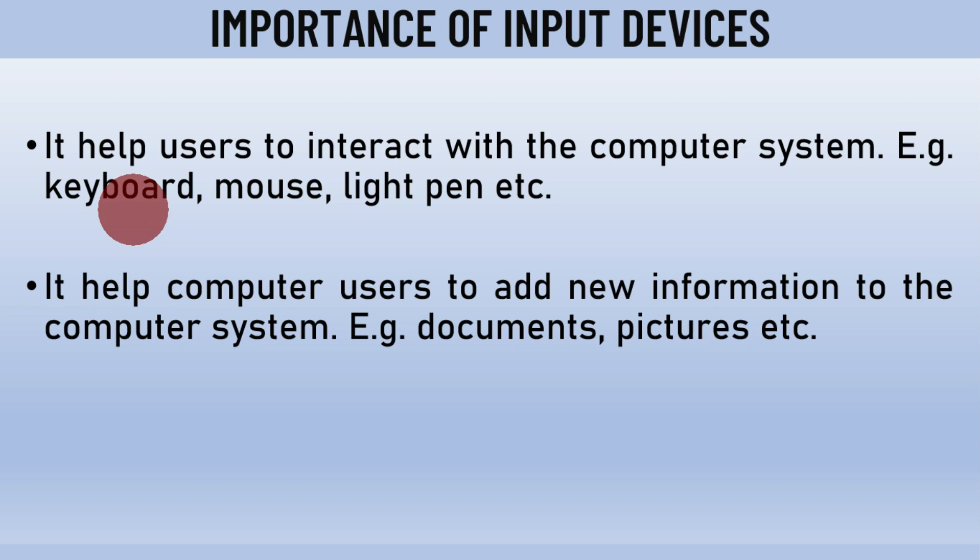The second importance of input devices is that they help computer users to add new information to the computer system, such as documents, pictures, videos, and audios. For example, if you have a flash drive containing video files, you can transfer that data into your computer system. Similarly, if an external hard drive contains documents or pictures, you can insert that information into your computer system.